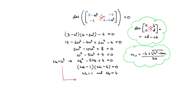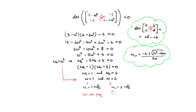The roots are omega_A equals 1 and omega_A equals 4. Since omega_A equals omega squared, the first omega is 1 and the second is 2. Thus the natural frequencies of the system are omega_1 equals 1 radian per second and omega_2 equals 2 radians per second. The smallest value is the first natural frequency and the largest is the second.